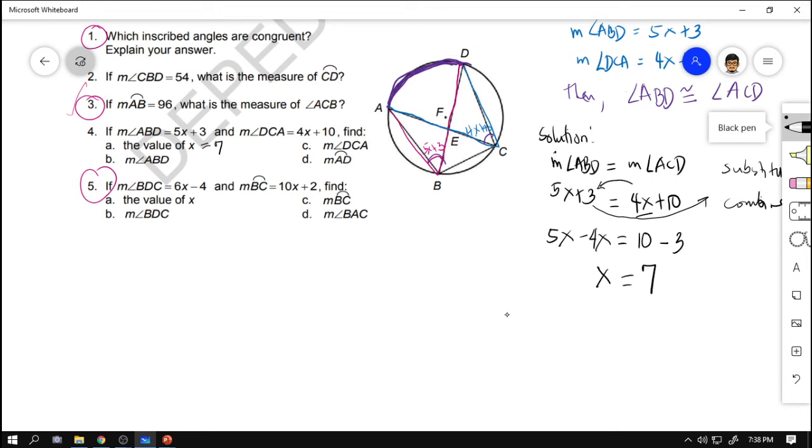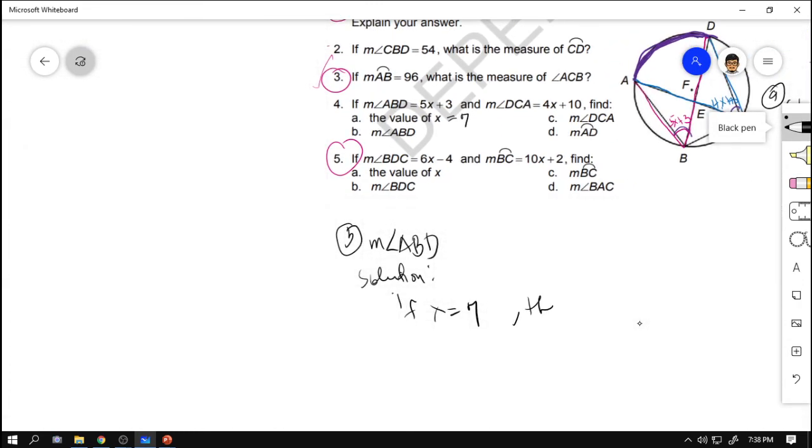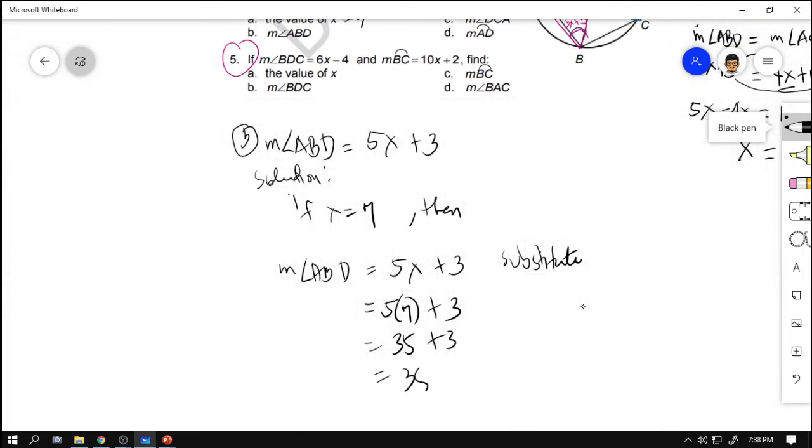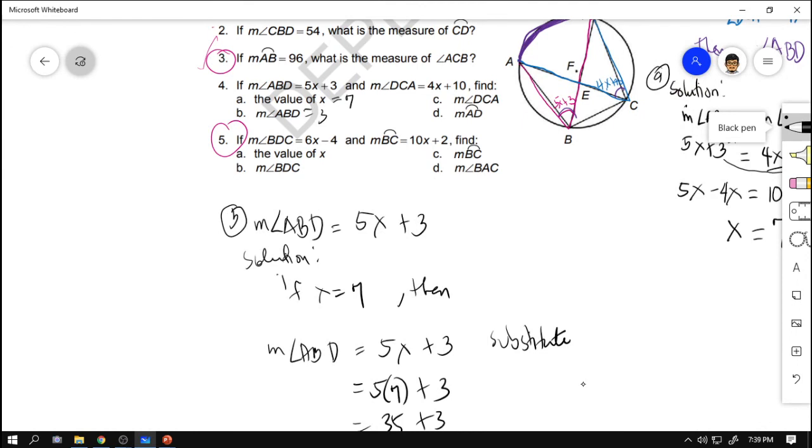Next, this is letter A. Letter B: what is now the measurement of angle ABD? So, solution. If X is equal to 7, then this is 5X plus 3. Then the measurement of angle ABD is equal to 5X plus 3, and then substitute. We have 5 times 7 plus 3. 5 times 7 is 35 plus 3, that is 38. So the measure of angle ABD is 38. So ito ay 38.